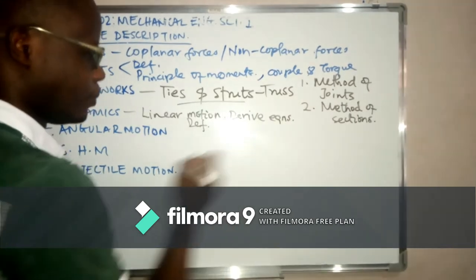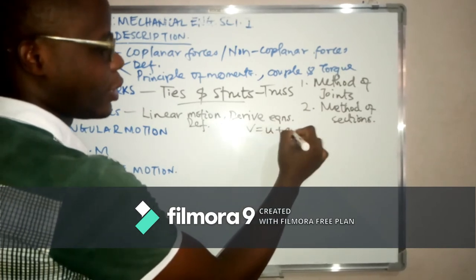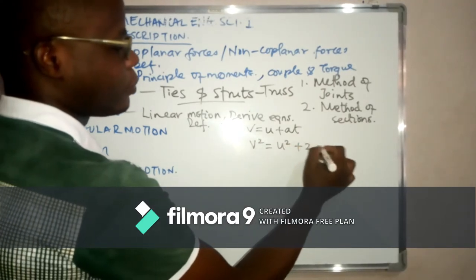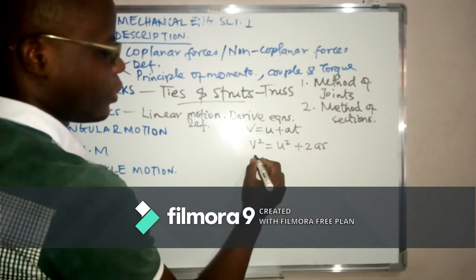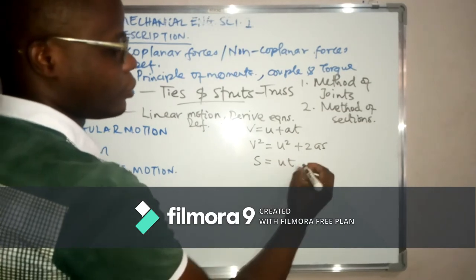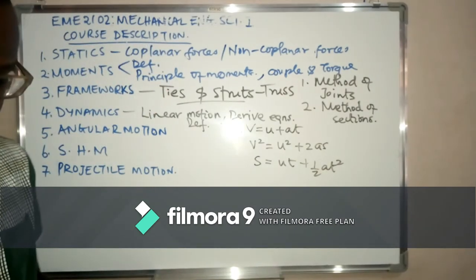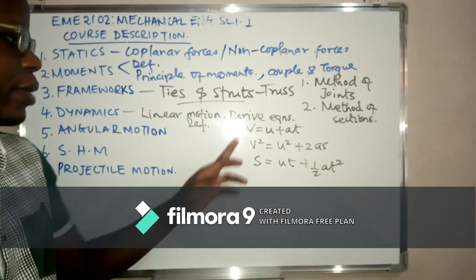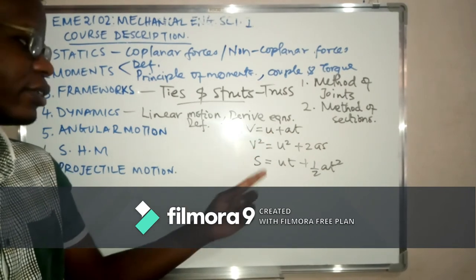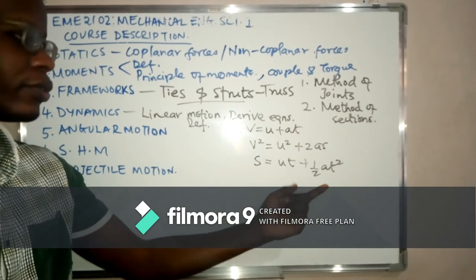Remember these three equations of linear motion. The first one is v = u + at. The second is v² = u² + 2as. The third equation is s = ut + at². In these equations, v is the final velocity, u is the initial velocity, s is the displacement, and a is the acceleration.